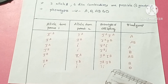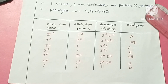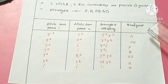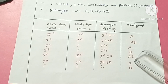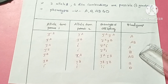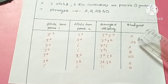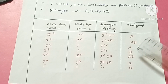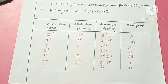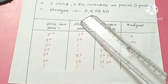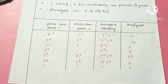In total there are six different genotype combinations: IA IA, IA IB, IA i, IB IB, IB i, and ii. And the phenotypes are four: A blood group, B blood group, AB blood group, and O blood group.